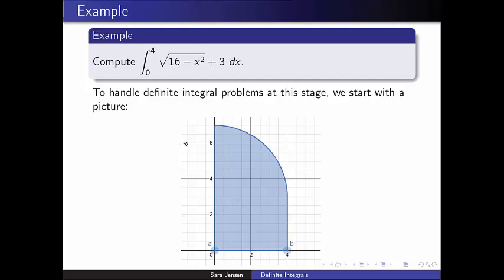Applying that to this problem, if I look at my quarter circle first, a quarter of a circle of radius 4 has area 4 pi. If I then take a look at this rectangle here, which has a base of length 4 and a height of 3, that has an area of 12. So altogether, my total area that's shaded in this picture is given by 12 plus 4 pi, and that's the final answer we should associate with this definite integral.